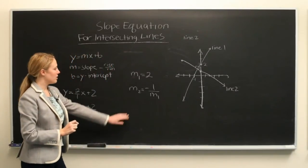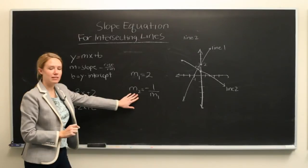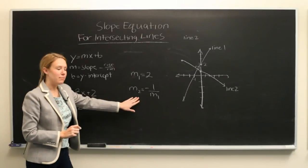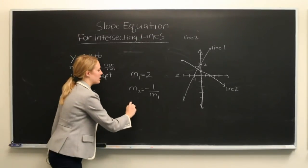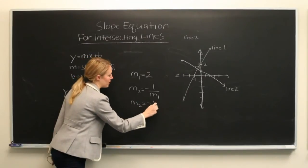So this is the equations of the slopes for intersecting lines. For this example, our slope of m2 is going to be minus 1 half,